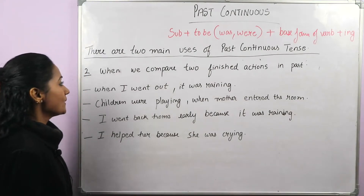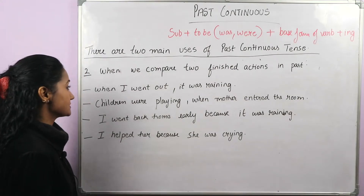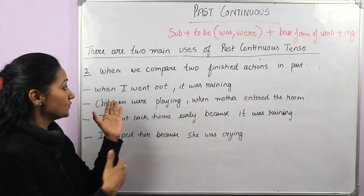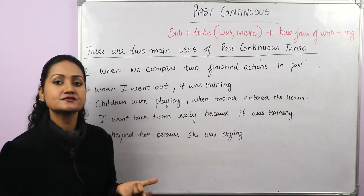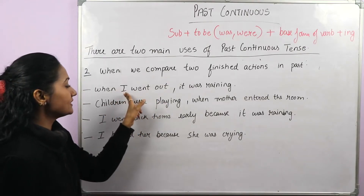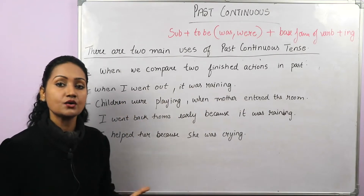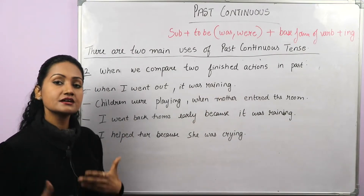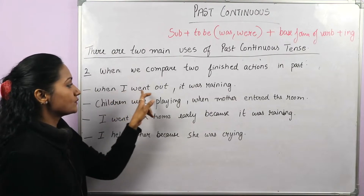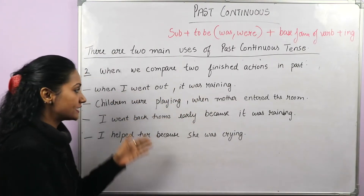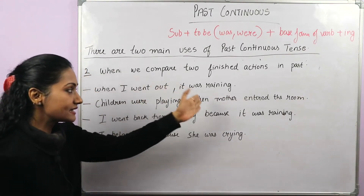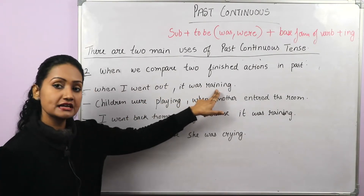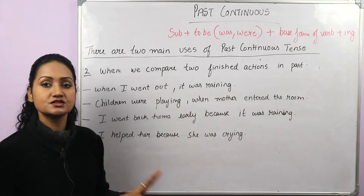The second use is when we combine two actions in the past. For example: 'When I went out, it was raining.' 'When I went out' is in simple past — it refers to a specific time. At that moment, the action of raining was going on. It continued at that point, so the second clause is in past continuous.